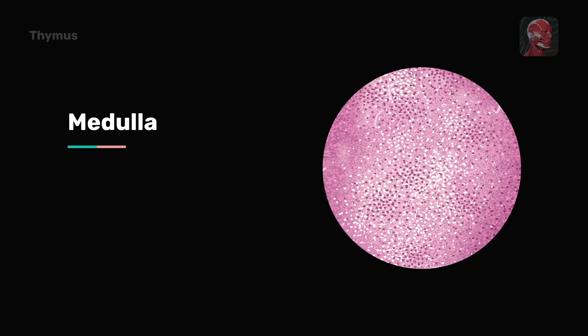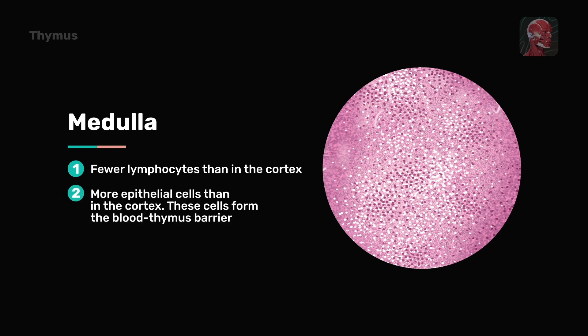The medulla, located centrally within each lobule, contains fewer lymphocytes compared to the cortex but has a higher concentration of epithelial cells. One of the key functions of the epithelial cells is their role in forming the blood-thymus barrier. This selective barrier separates the cortex from the bloodstream, preventing exposure of lymphoblasts to circulating antigens.